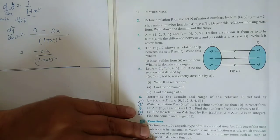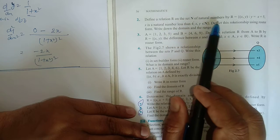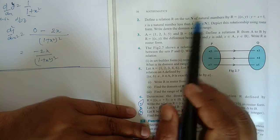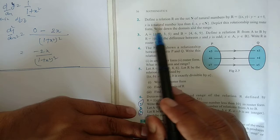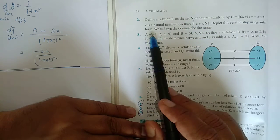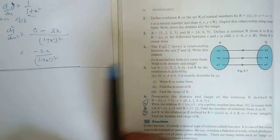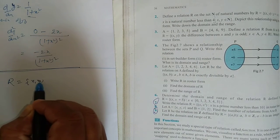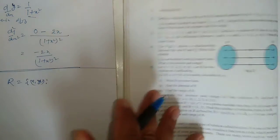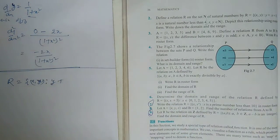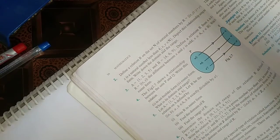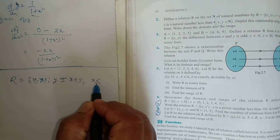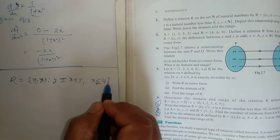Question number 2: Define a relation R on the set of natural numbers such that (x, y) where y is equal to x plus 5, and x is a natural number less than 4. We need to depict the relation in roster form and write down the domain and range. Since x is less than 4, x can only be 1, 2, or 3.